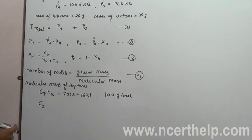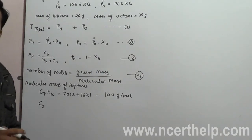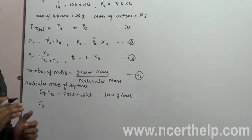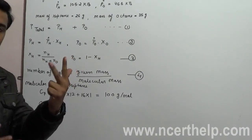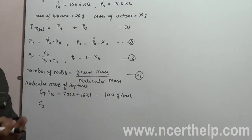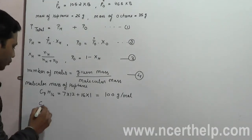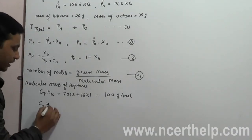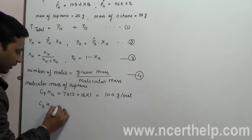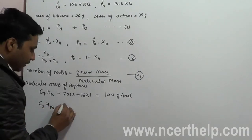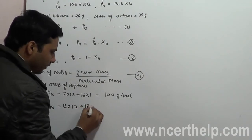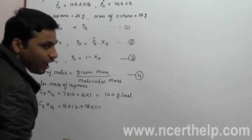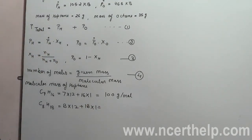Similarly, for octane: the formula is C8H18 — eight carbons and, using CₙH₂ₙ₊₂, that gives 2×8+2 = 18 hydrogens. So the molecular mass equals 8×12 plus 18×1.